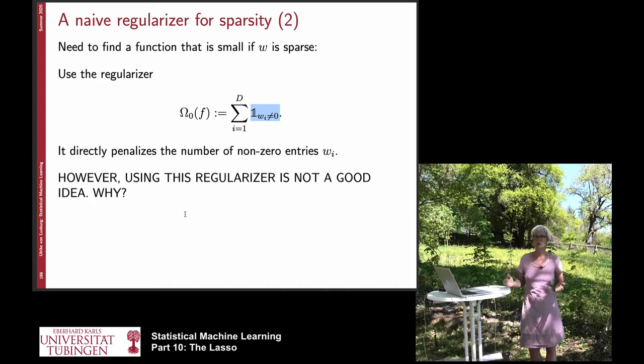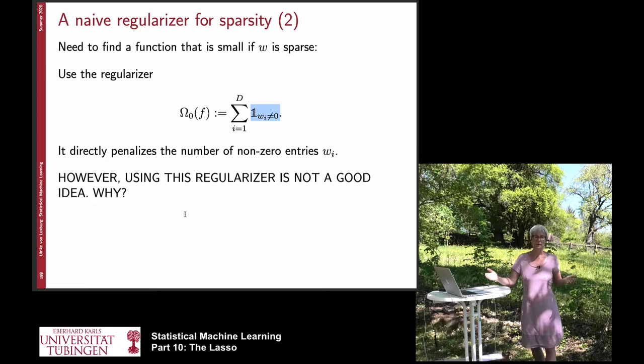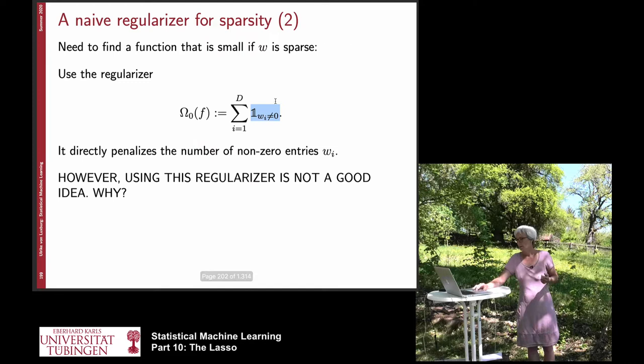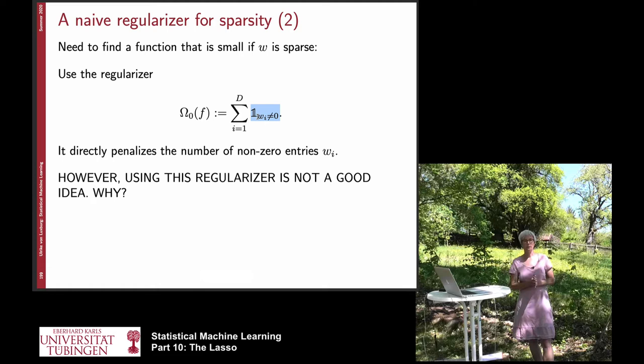However, this function has big drawbacks. The problem with this function is that it is not a convex function — it's in fact a discrete function. This function essentially just checks how many non-zero coefficients we have. Discrete functions are always hard to optimize.